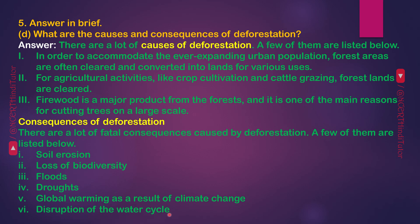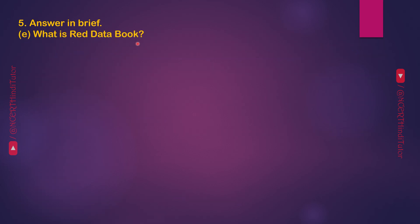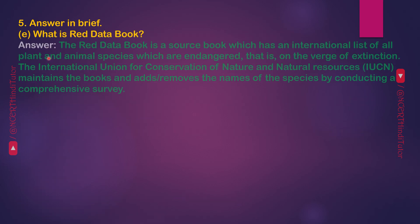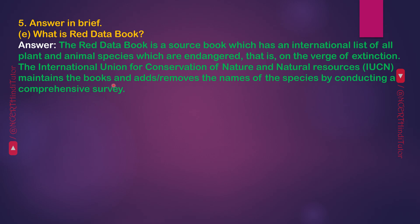What is Red Data Book? The Red Data Book is a source book which has an international list of all plant and animal species which are endangered, i.e. on the verge of extinction. The International Union for Conservation of Nature and Natural Resources (IUCN) maintains the book and adds or removes the names of species by conducting a comprehensive survey.